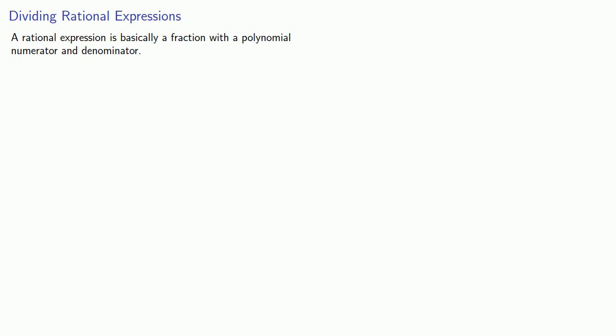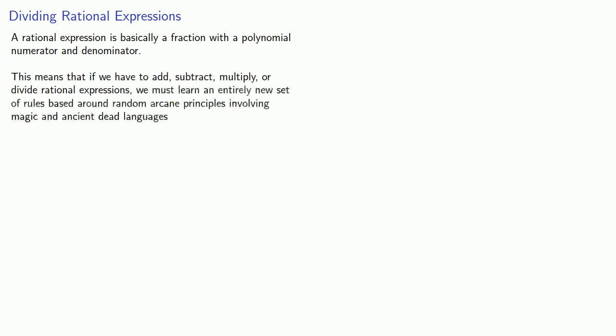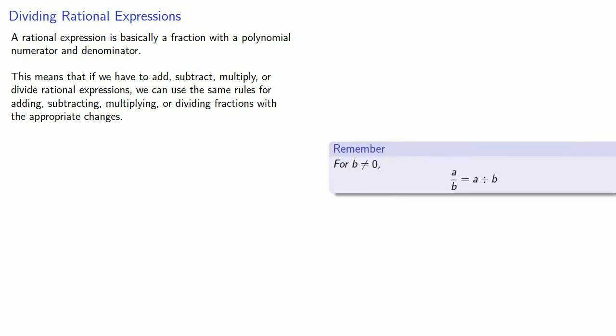A rational expression is basically a fraction with a polynomial numerator and denominator. This means that if we have to add, subtract, multiply, or divide rational expressions, we can use the same rules for adding, subtracting, multiplying, or dividing fractions with the appropriate changes. So with fractions, for b not equal to 0, a over b is the same as a divided by b. And so for y not equal to 0, x over y is the same as x divided by y.